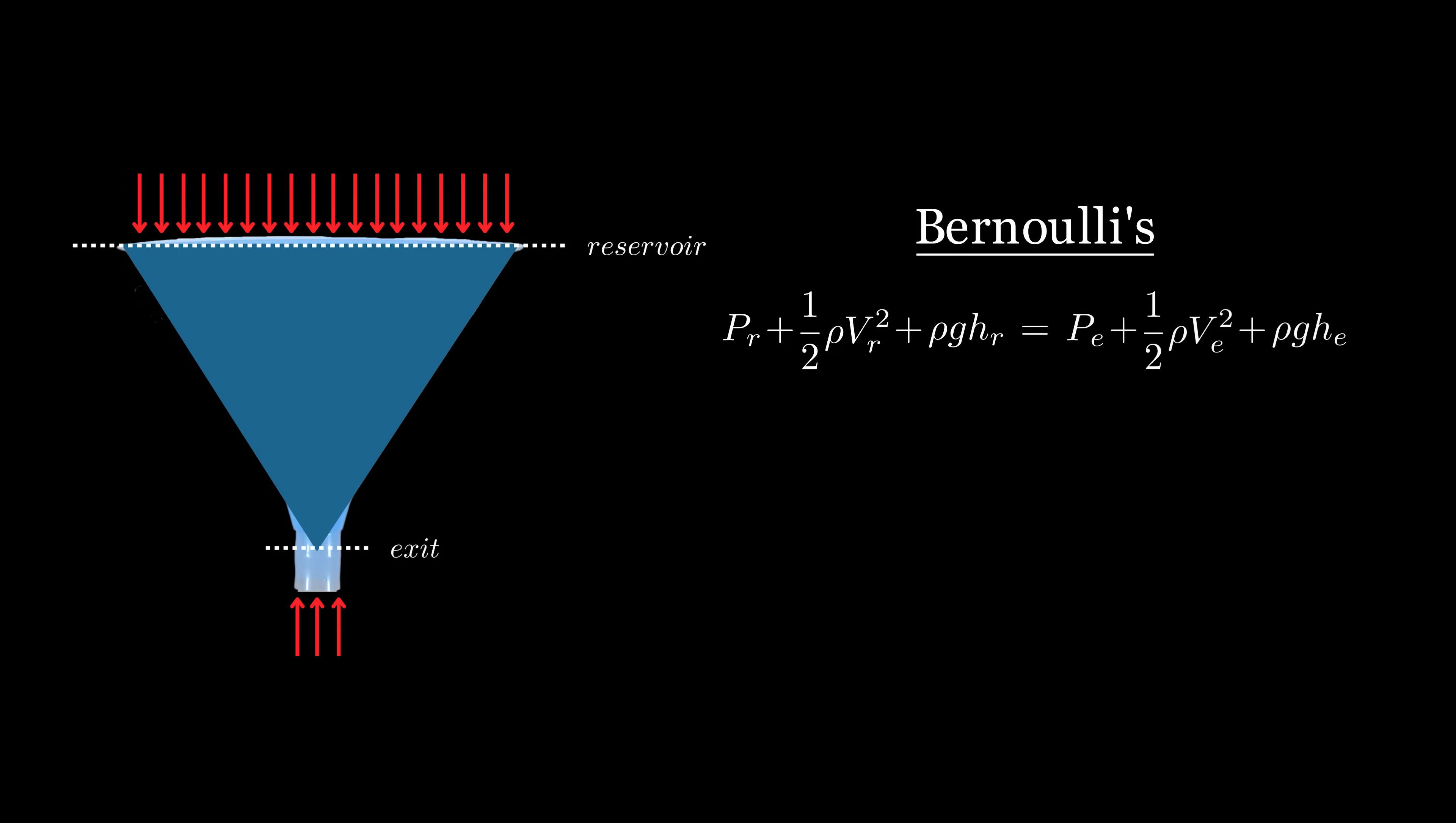The pressure at the surface and the exit are both at atmospheric air pressure, so these terms cancel, and the height of the exit is always zero based on our defined axis, so this term is zero.